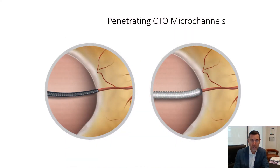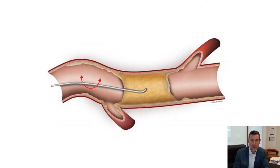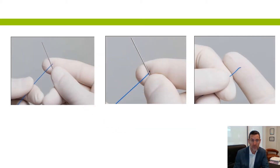The guide wire engages using the tip and is then drilled through the atheromatous plaque, hopefully in a transluminal plane, but sometimes we go sub-intimal. We make a very fine 1mm 30-degree angle at the tip of a hydrophilic coated guide wire — this is the best way of tackling a CTO.